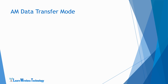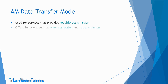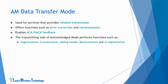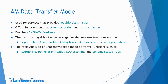Acknowledged Mode or AM Mode is used for services that provide reliable transmission. This mode provides reliability in transmission by offering functions such as error correction and retransmission. It enables the use of ACK/NAC feedback which is necessary for error sensitive signaling and data. Acknowledged Mode offers all the available RLC functions such as segmentation, concatenation, adding header, retransmission, and resegmentation at the transmitter side.